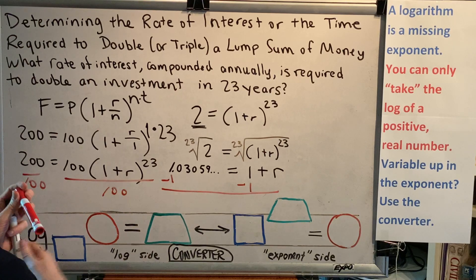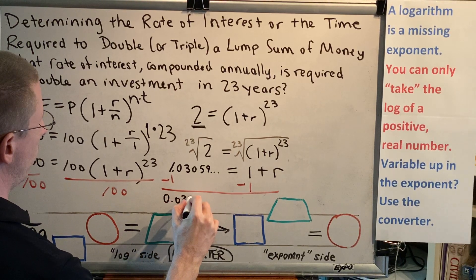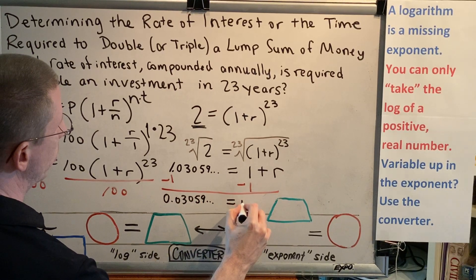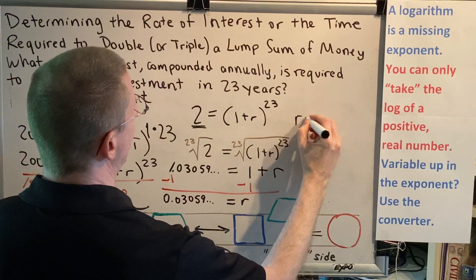So minus 1, minus 1. Then on the left, we're left with only the decimal part: 0.03059 dot dot dot equals R. So this is our exact answer for R as a decimal.